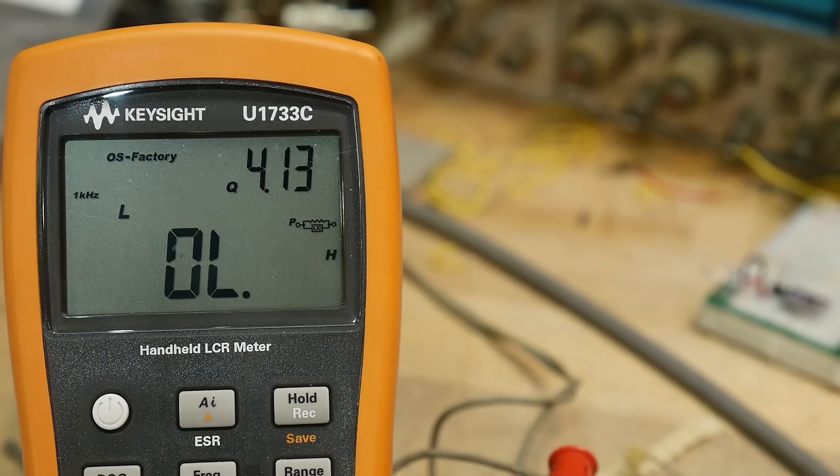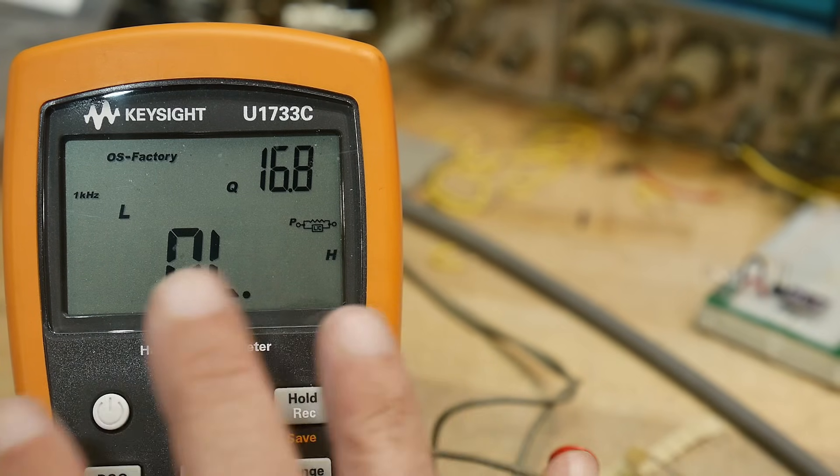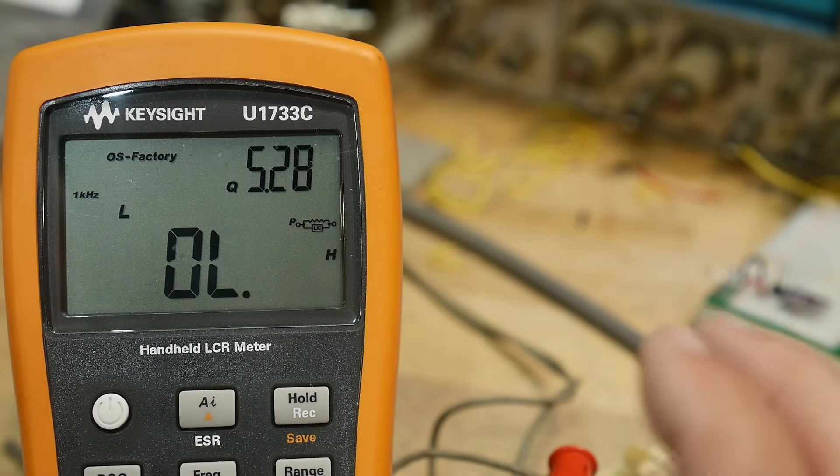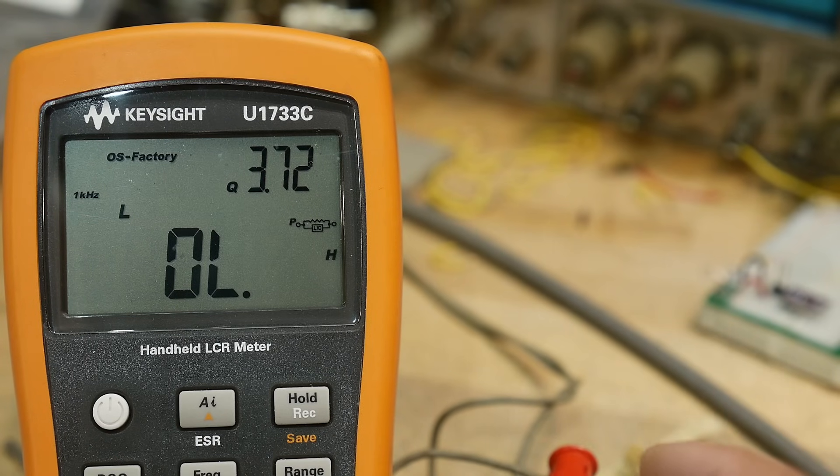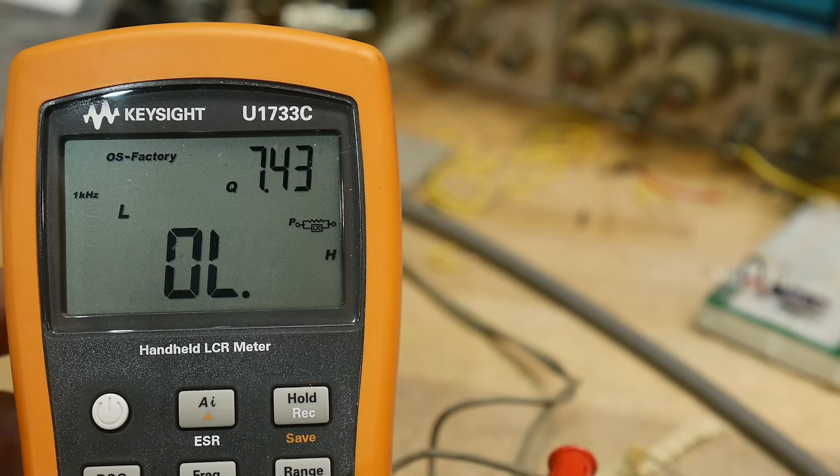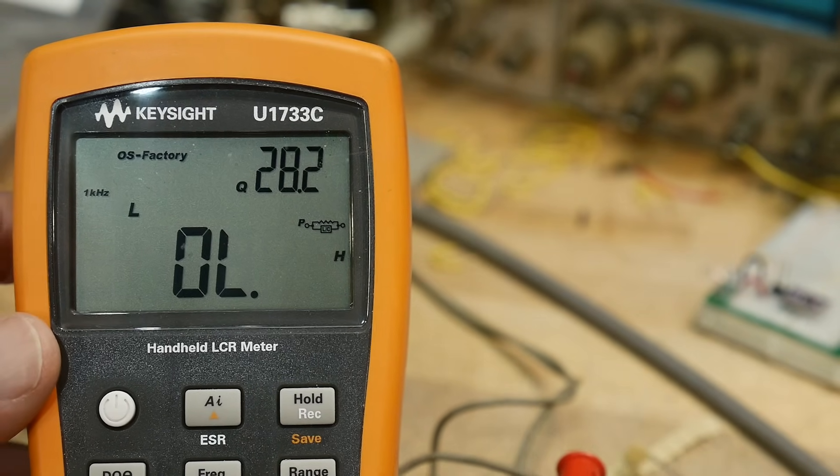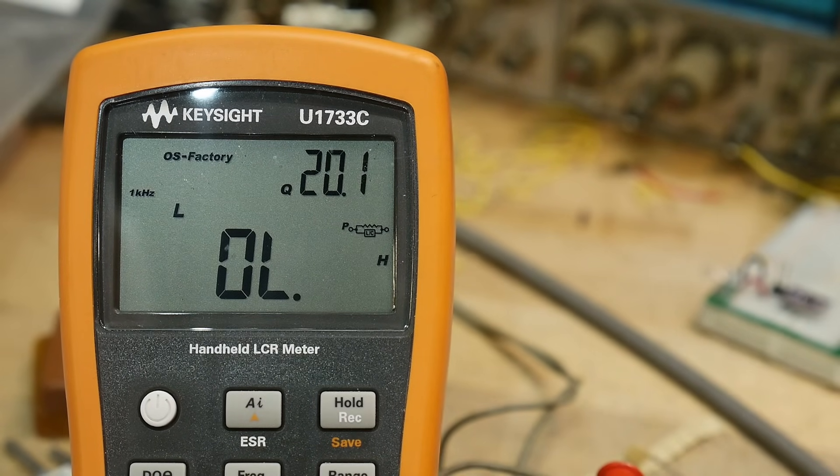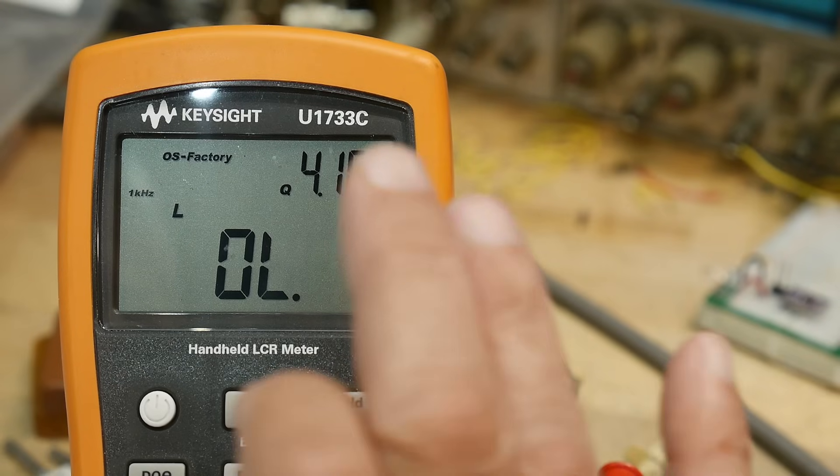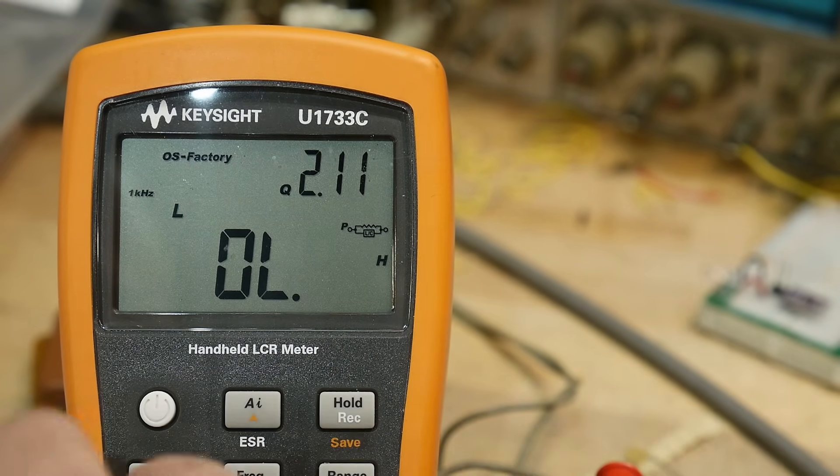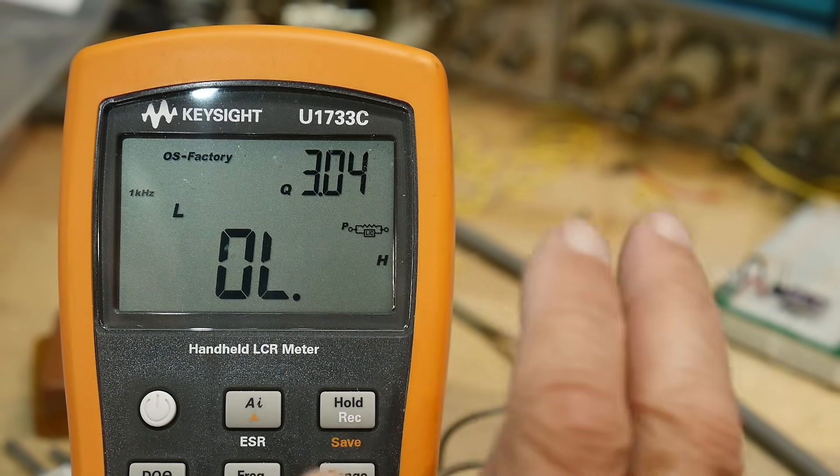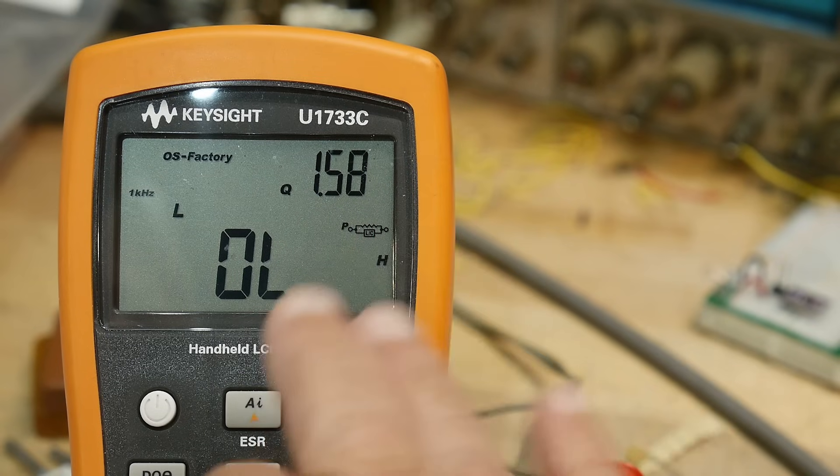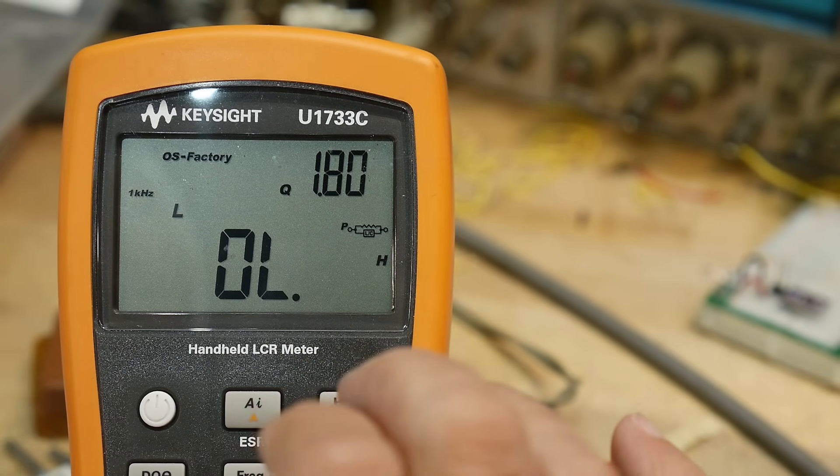And the question I get asked is, well, when do you use one over the other? Well, the meter chooses it for you. But assuming that you want to choose it yourself, why is one better than the other? And it comes down to impedance, effective resistance of the parts. And the rule of thumb is if it's below 100 ohms, either in resistance or reactance or whatever.